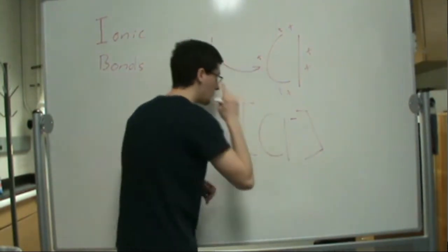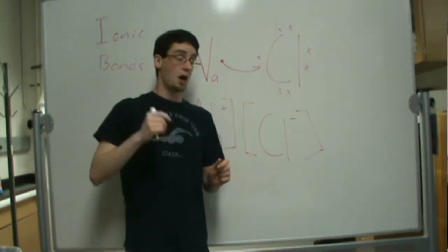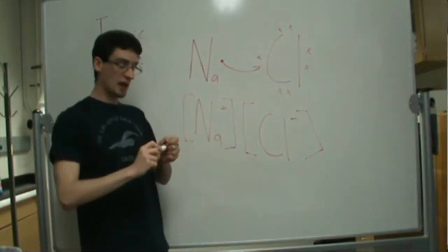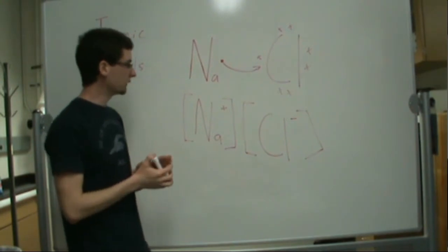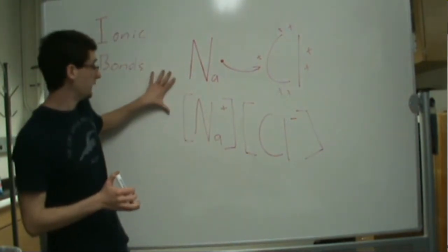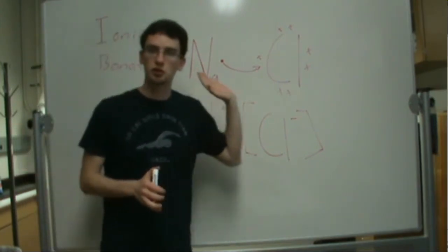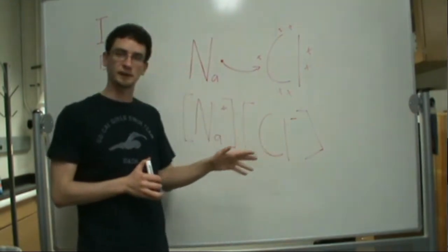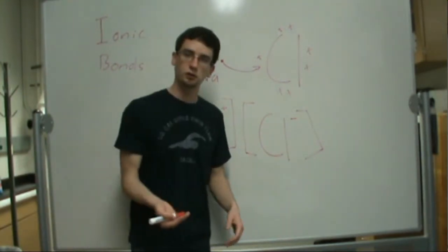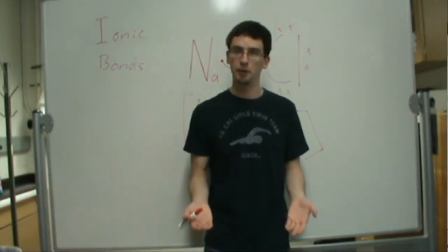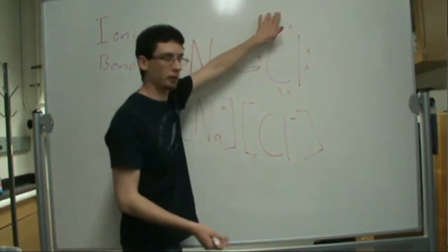So the difference between covalent bonds and ionic bonds is that in ionic bonds the electrons are pretty much donated to one side, and in covalent bonds they're shared. Also, in covalent bonds you usually have nonmetals bonding together, and in ionic bonds you usually have a metal and a nonmetal bonding.